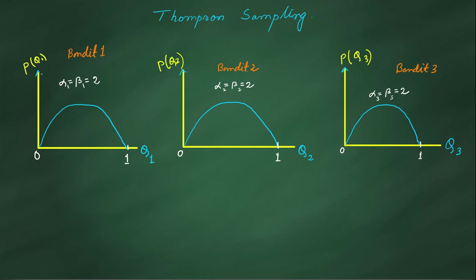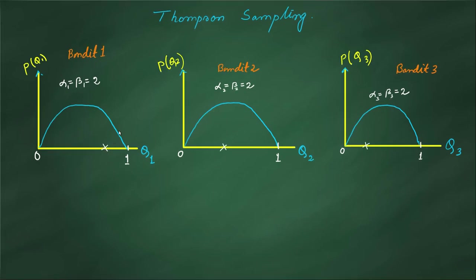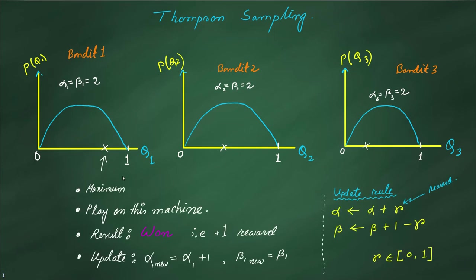For Thompson Sampling, we assume an initial distribution of Q — the action value — for each bandit. We start with a wide distribution for all bandits, assuming alpha and beta equal to 2. We then sample a Q value from each distribution — first, second, and third bandit. Whichever bandit gives the maximum sampled Q value is the one we play.